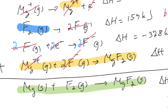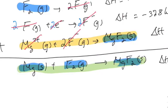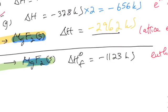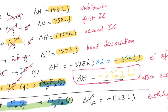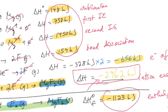Now you add all the enthalpy values: sublimation (148), first IE (738), second IE (1450), bond dissociation (159), and electron affinity multiplied by two (−656). These must sum with the unknown lattice energy to equal the enthalpy of formation, which is −1123 kJ. Solving for the lattice energy gives −2962 kJ. You calculate that by taking −1123 and subtracting all the other known values.